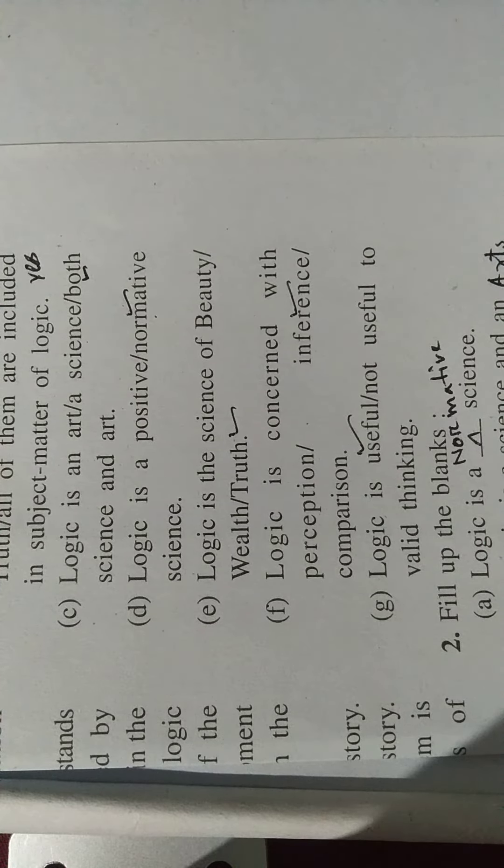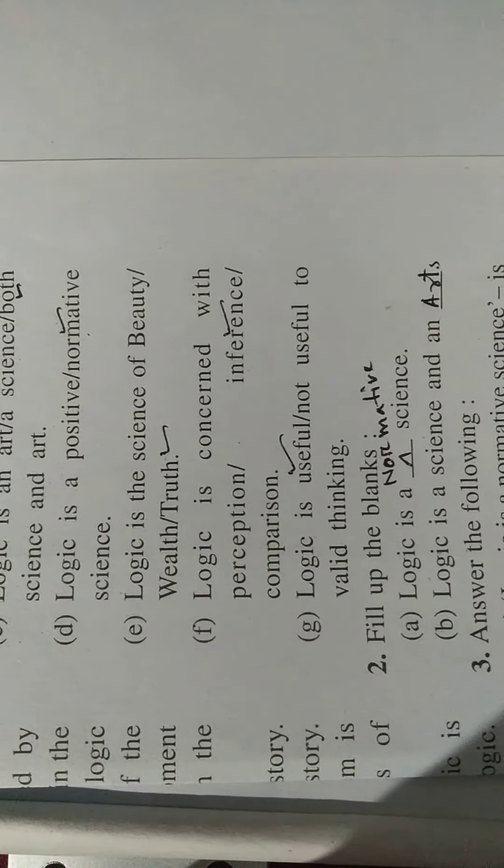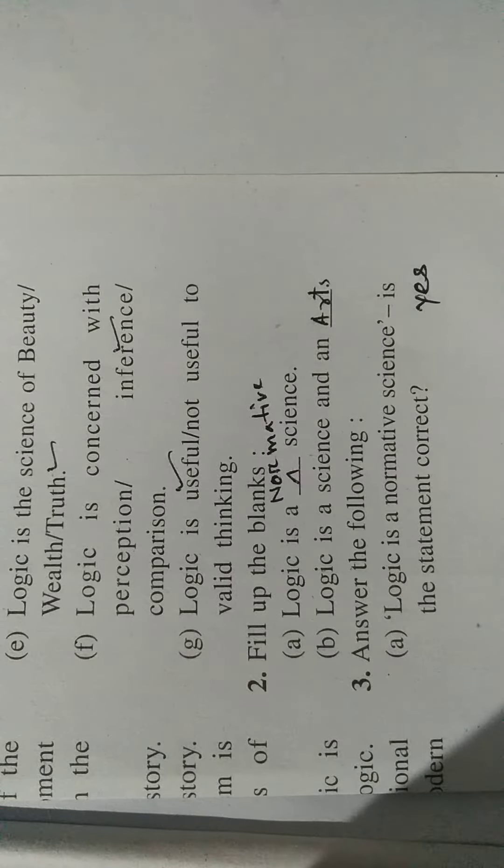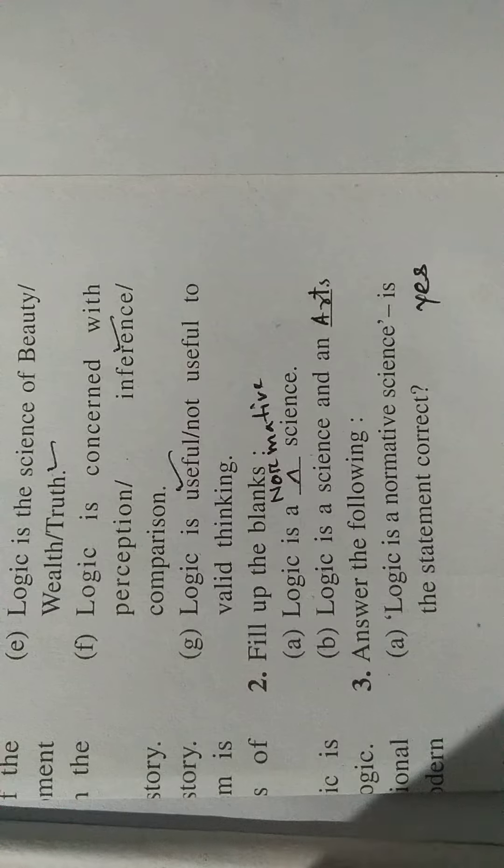D number: logic is a normative science. E: logic is a science of truth. Logic is concerned with inference.